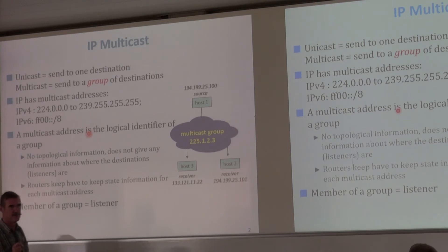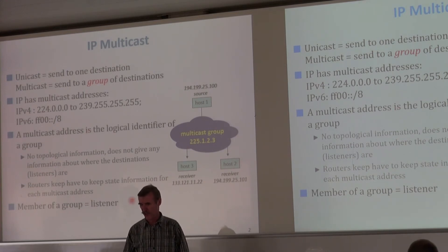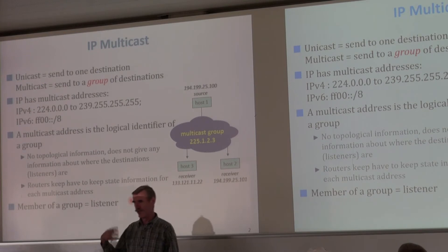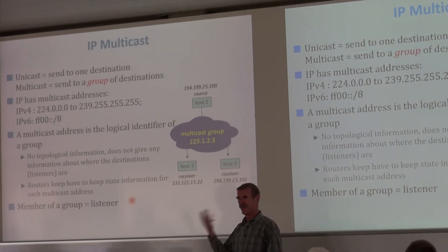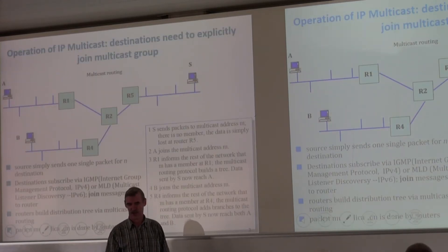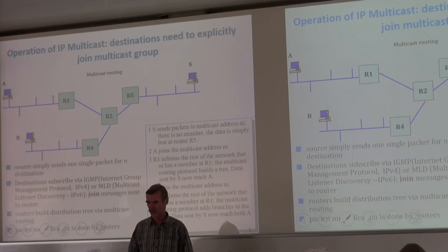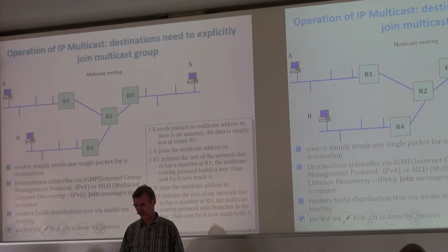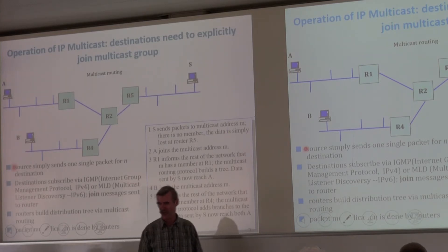Multicast is radically different from everything we've seen in IP because an IP multicast address is a logical identifier — the identifier of a group. It doesn't say anything about where the members are. The members are essentially the listeners, the receivers. The multicast source is whoever sends the TV stream, and the multicast group members are whoever watches TV. The source will send one single packet for all destinations.